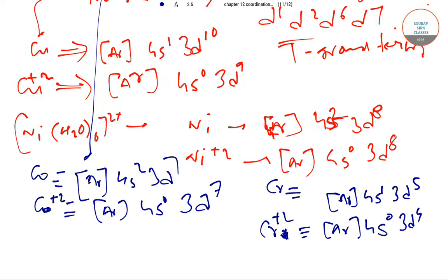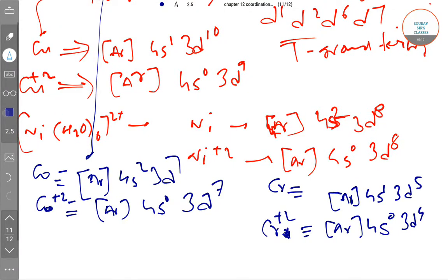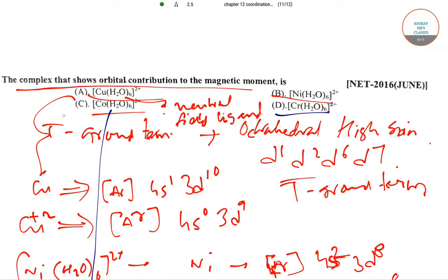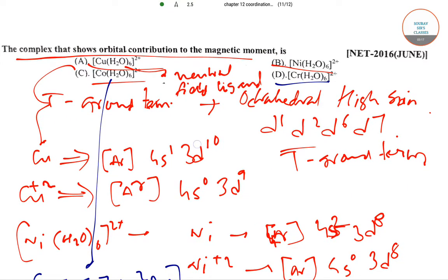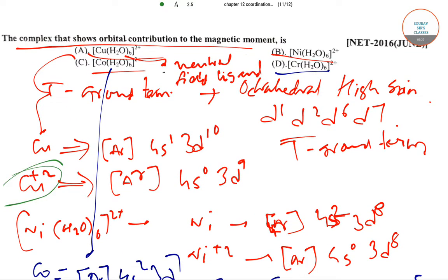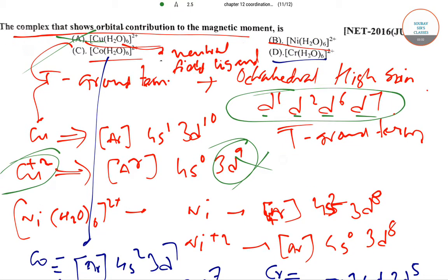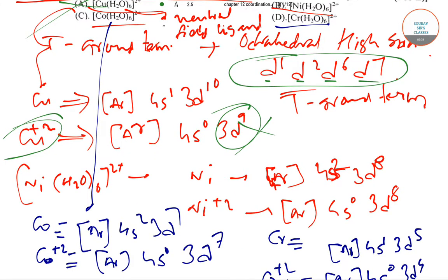Now we will take these options. So Cu+2 has a 3d9 configuration which is not among this. We need d1, d2, d6, and d7. So d9 is definitely not that, so we have successfully eliminated option number A. Then coming to option number B, we have 3d8 with Ni+2 which is not among them.